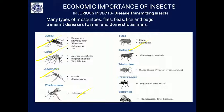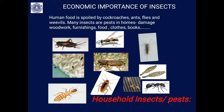Fleas transmit plague and other diseases. The tsetse fly transmits African trypanosomiasis, and Triatoma causes Chagas disease. Many types of mosquitoes, flies, fleas, and lice transmit varieties of diseases in both humans and domestic animals.